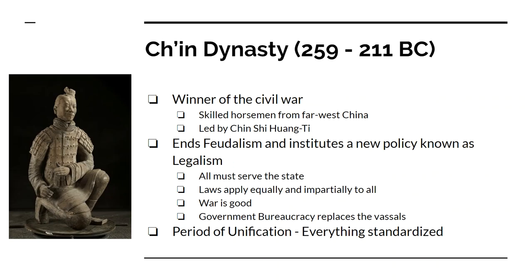The one that survives is called the Qin Dynasty — Q-I-N. The Qin are the most skilled horsemen, from far west China, and they come and take over. They're led by a man named Qin Shi Huangdi. What Qin Shi Huangdi is going to do is end feudalism — he says feudalism is what caused the whole mess — and replace it with something called legalism. The first thing he does is force 120,000 upper-class families to move and live in his capital, and if you didn't move, he kills you.